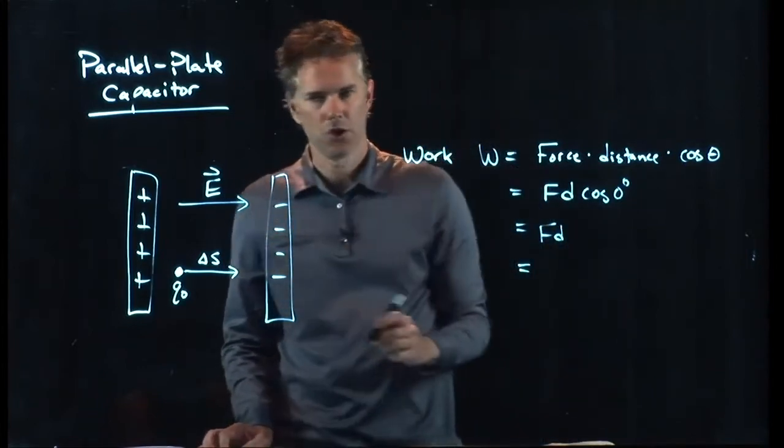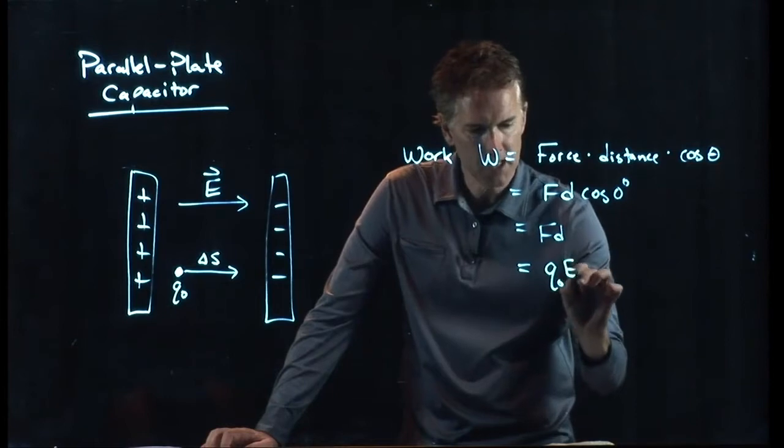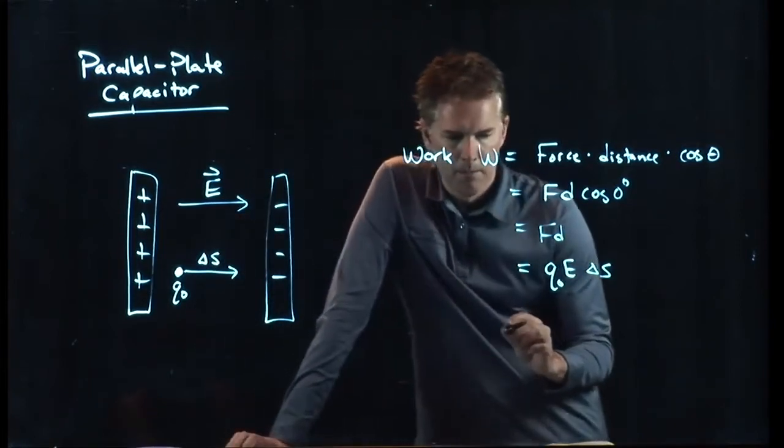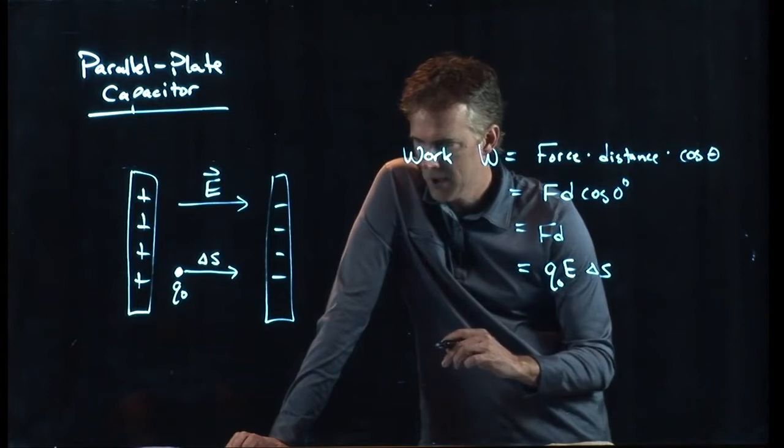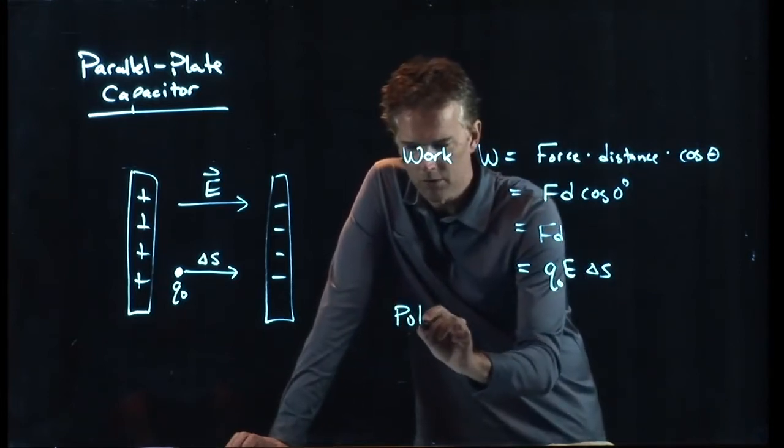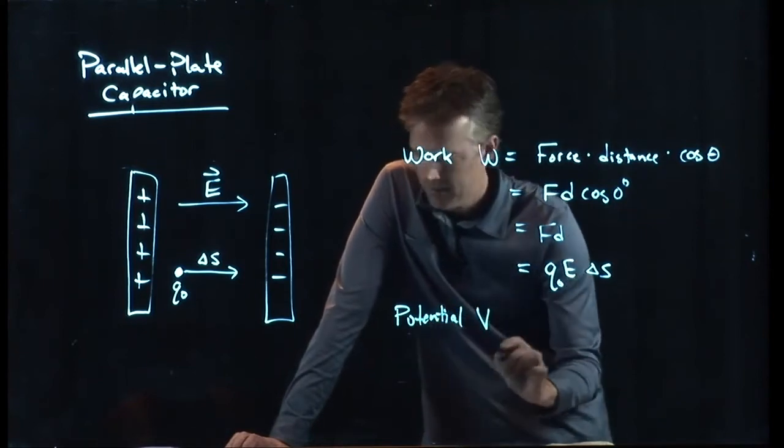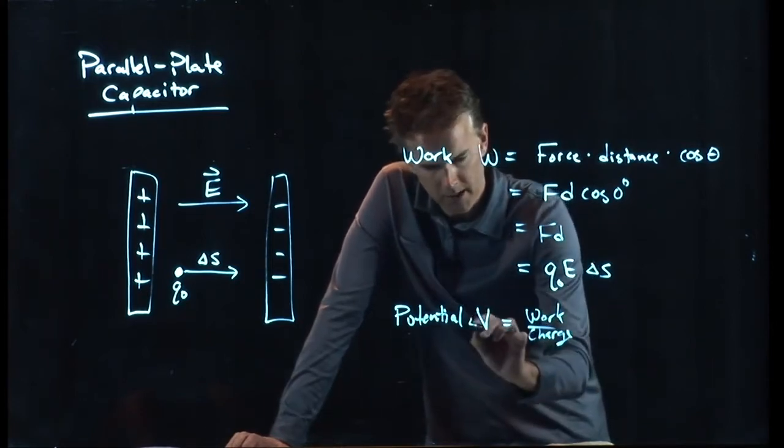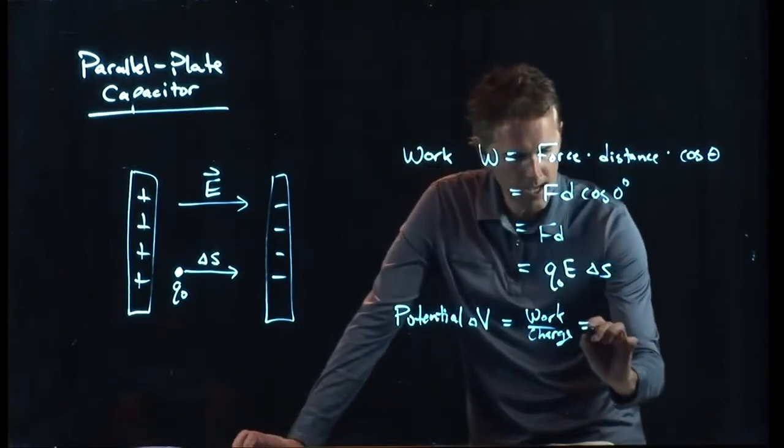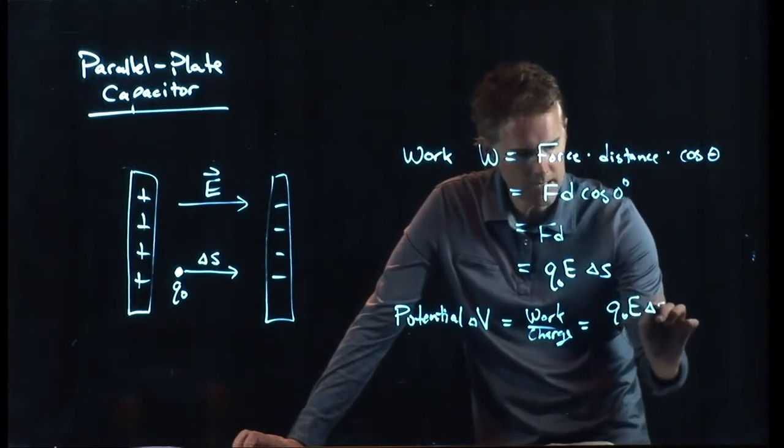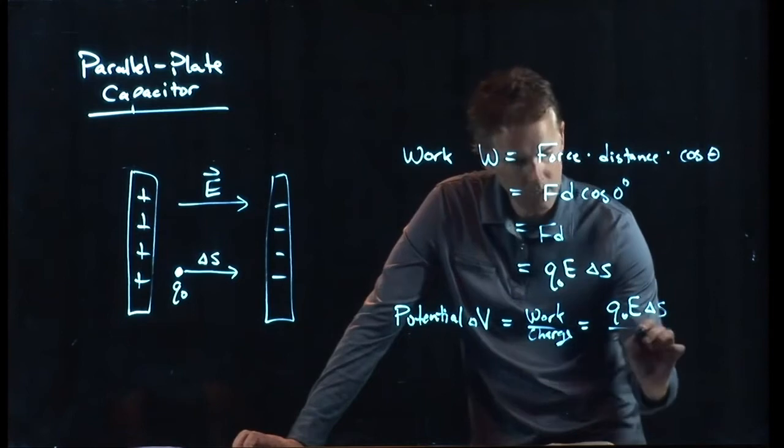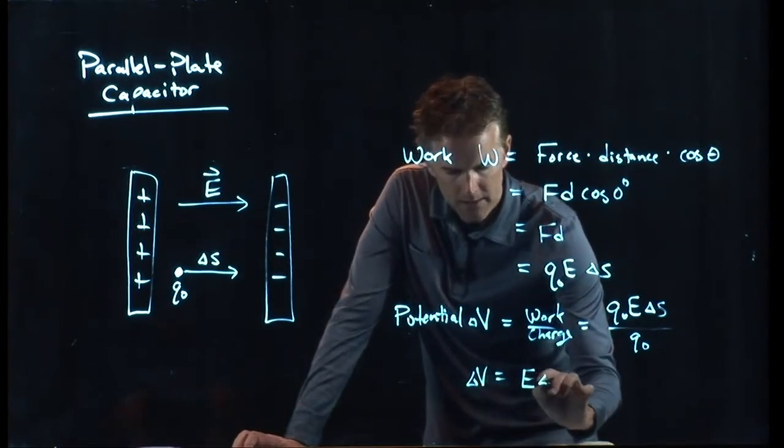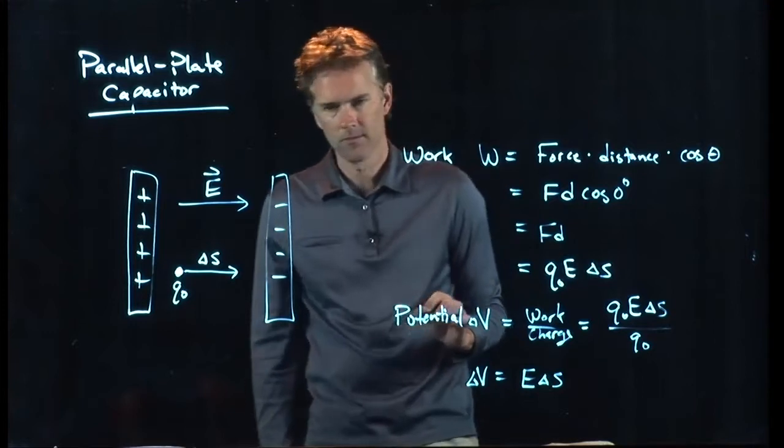Work W equals force times distance times the cosine of theta. Everything's in the same direction here, so it's just going to be force times distance. The force on charge Q naught is Q naught times E. The distance that we're going to go, we said, is delta S. But we know something about potential and these quantities. Potential V is equal to the work over the charge. Specifically, delta V is the work over the charge. And so we get Q naught E delta S divided by Q naught. The Q naughts drop out and we get delta V equals E delta S.